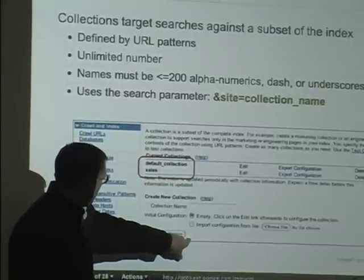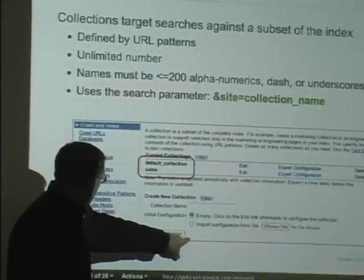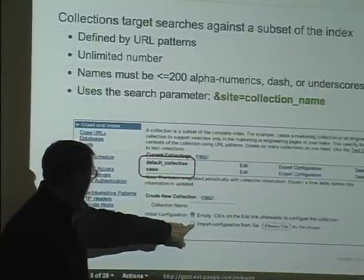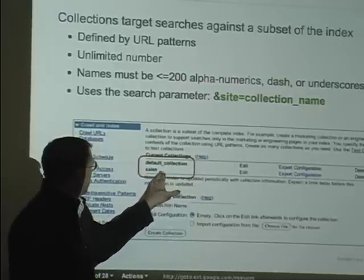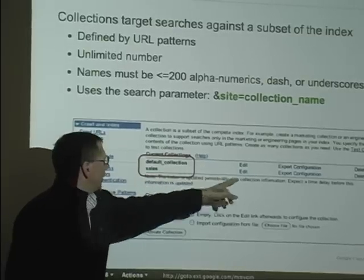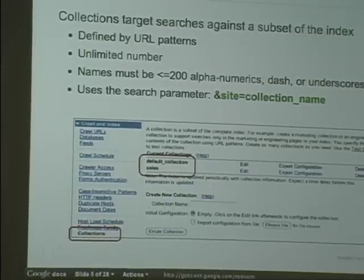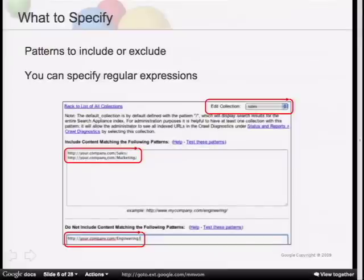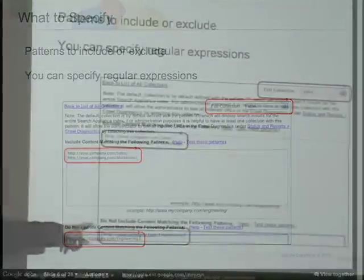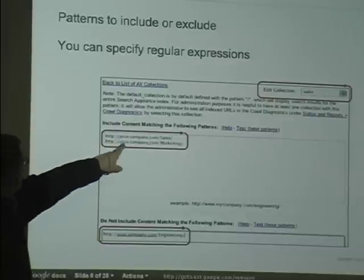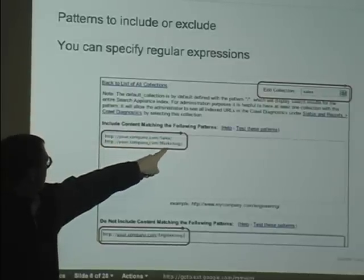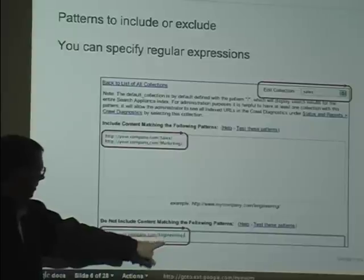It adds the name of the collection and then you can click 'Edit.' When you click on edit, you're given two boxes: one for including URL patterns and one for excluding URL patterns. So you can include content from the sales directory and the marketing directory, but exclude content from the engineering directory.